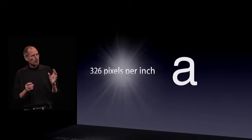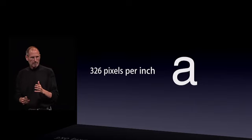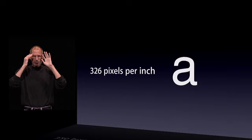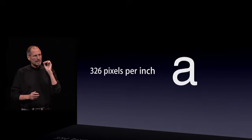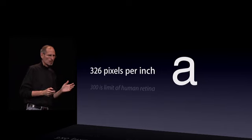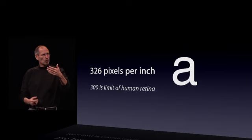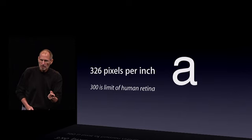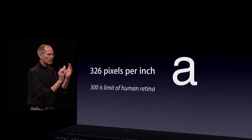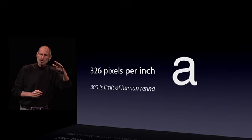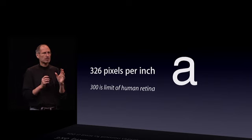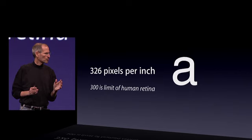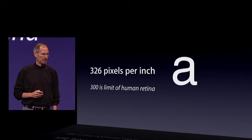The retina display has 326 pixels per inch. There's never been a display like this on a phone — people haven't even dreamed about it. It turns out there's a magic number right around 300 pixels per inch that, when you hold something around 10 or 12 inches away from your eyes, is the limit of the human retina to differentiate the pixels. So they're so close together at this 300 pixels per inch threshold that things start to look like continuous curves — like text looks like you've seen it in a fine printed book, unlike anything you've ever seen on an electronic display. At 326 pixels per inch, we are comfortably over that limit.